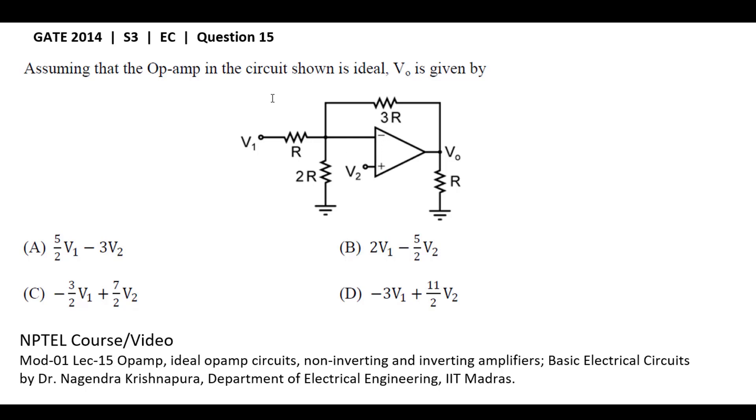The voltage at the inverting terminal equals the voltage at the non-inverting terminal because in ideal op-amp there is a virtual short connected between these two nodes. So I can assume this node voltage is also V2.